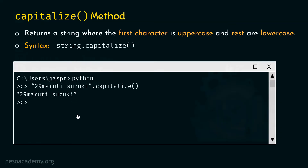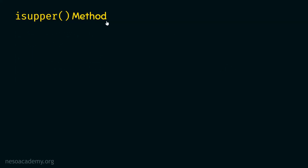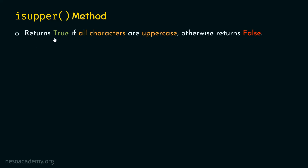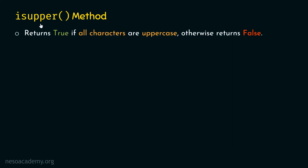Let's move on to isupper method. Isupper method returns true if all characters are uppercase; otherwise it returns false. Isupper is different from upper method — upper method returns a string, whereas isupper method returns a boolean value: true if all characters are uppercase, false otherwise.